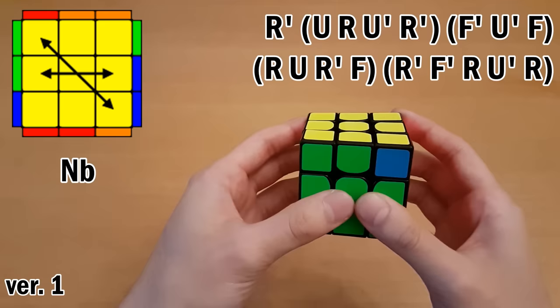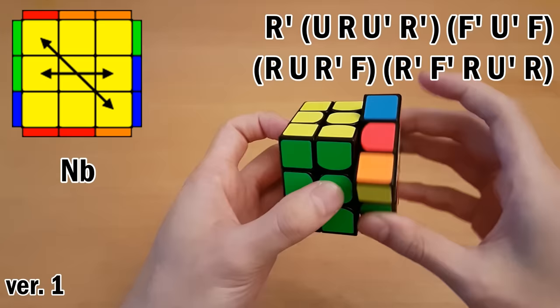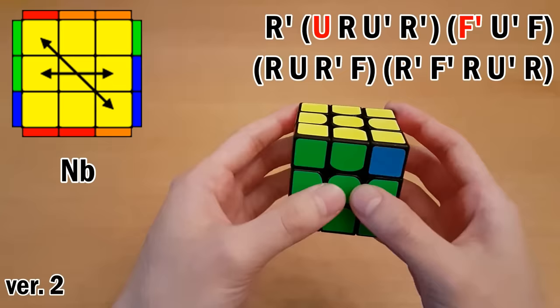For this N-perm all of the blocks here are on the left and again there's an easier and a harder version. They use the same algorithm and the easier one begins with your right hand up here like this. So all the finger tricks here are very straightforward. Thumb. Thumb here. And faster would look like this.